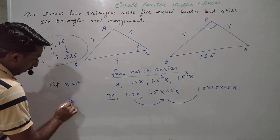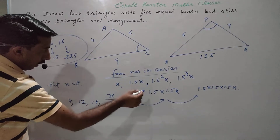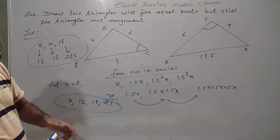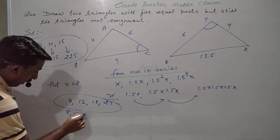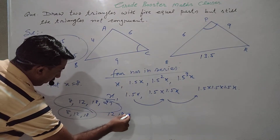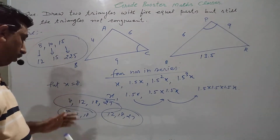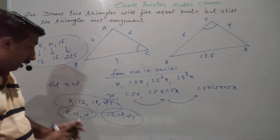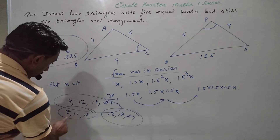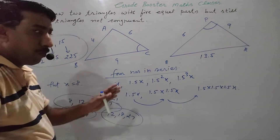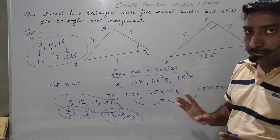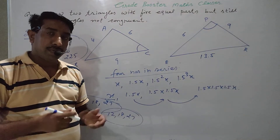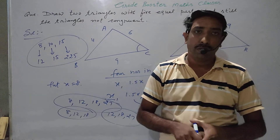The sizes in the series are 8, 12, 18, and 27. The two triangles will use consecutive triples: triangle one has sides 8, 12, 18 and triangle two has sides 12, 18, and 27. We observe that sides 12 and 18 appear in both triangles. The sides are proportional with ratio 1.5, so all angles are equal and two sides are equal, but the triangles are still not congruent. This is the trick to draw a pair of triangles having five parts equal but still not congruent.